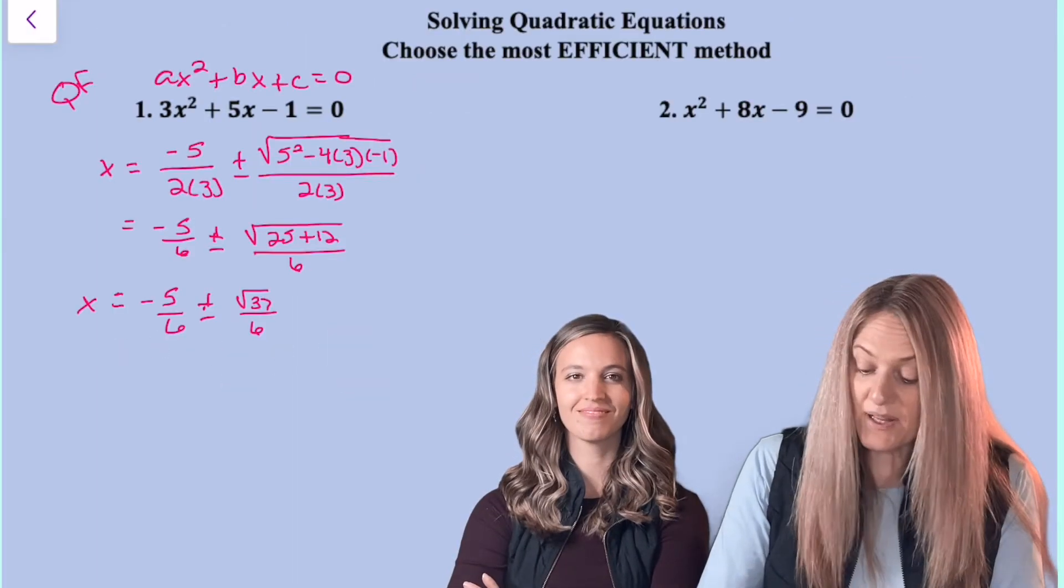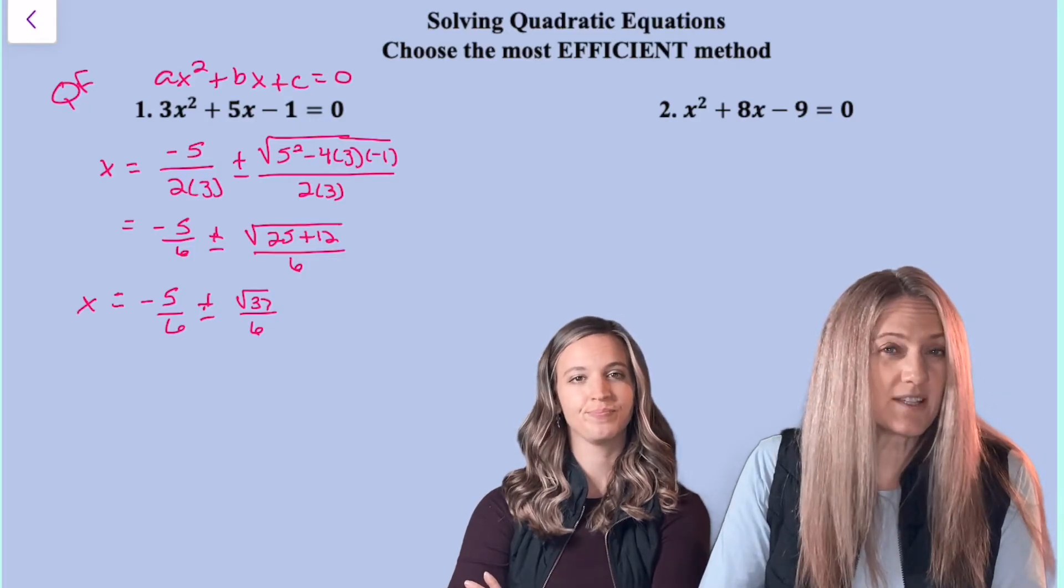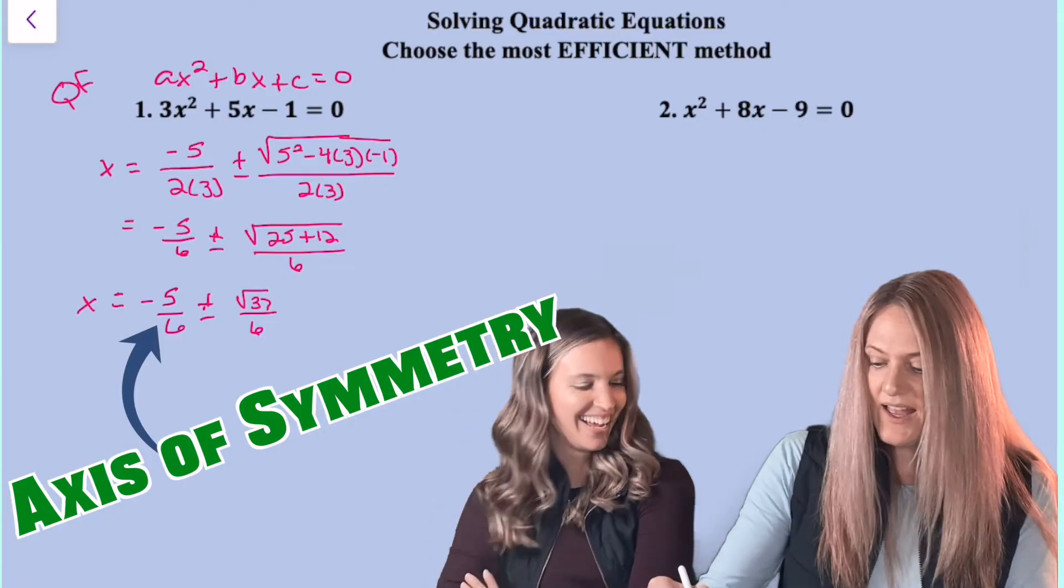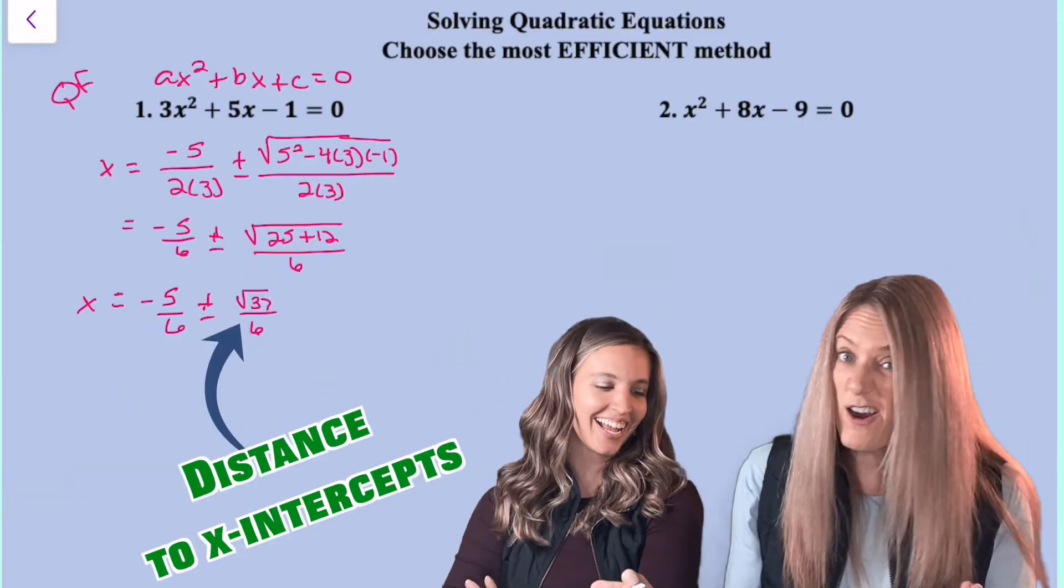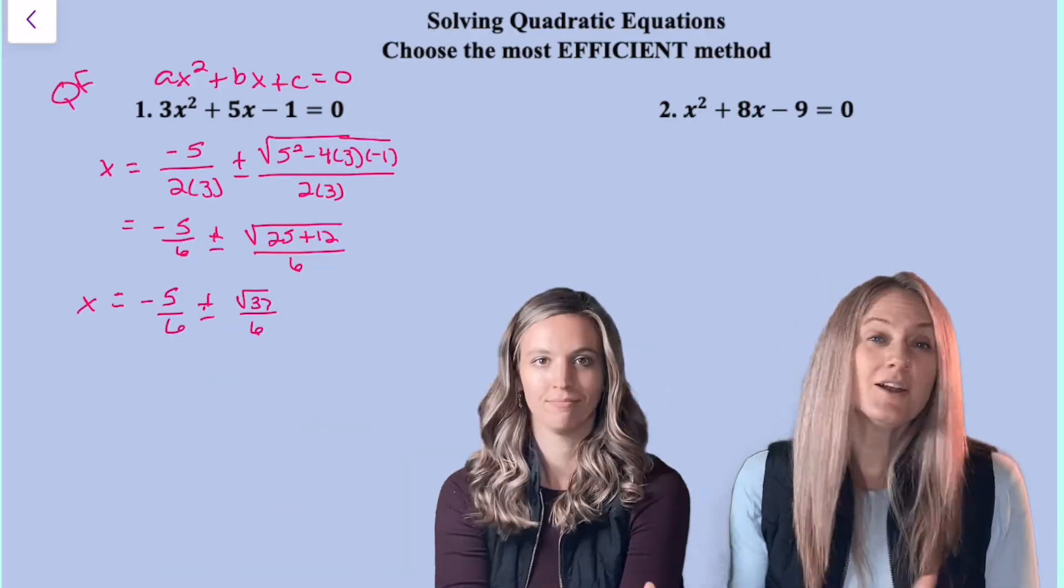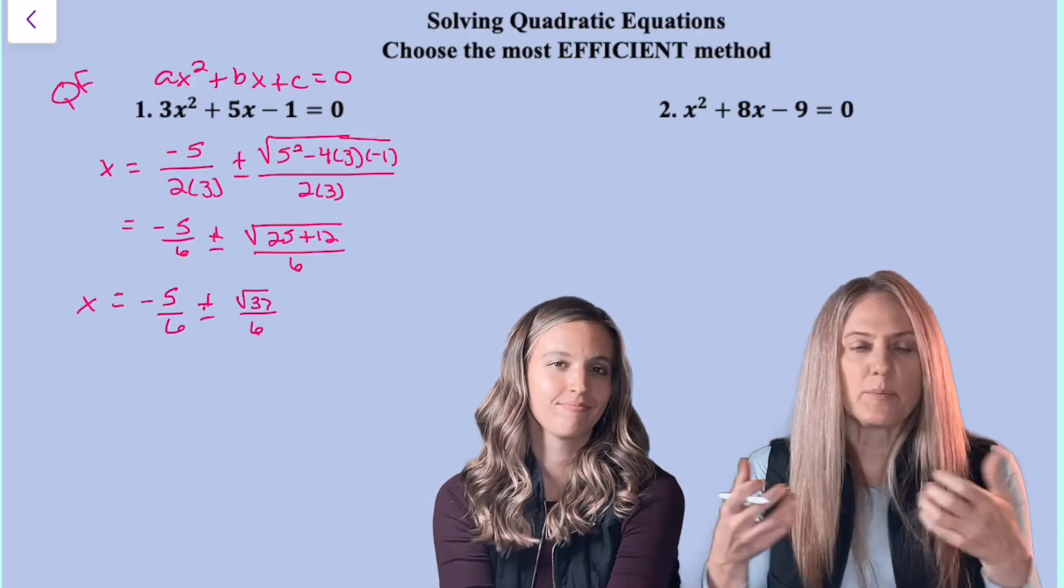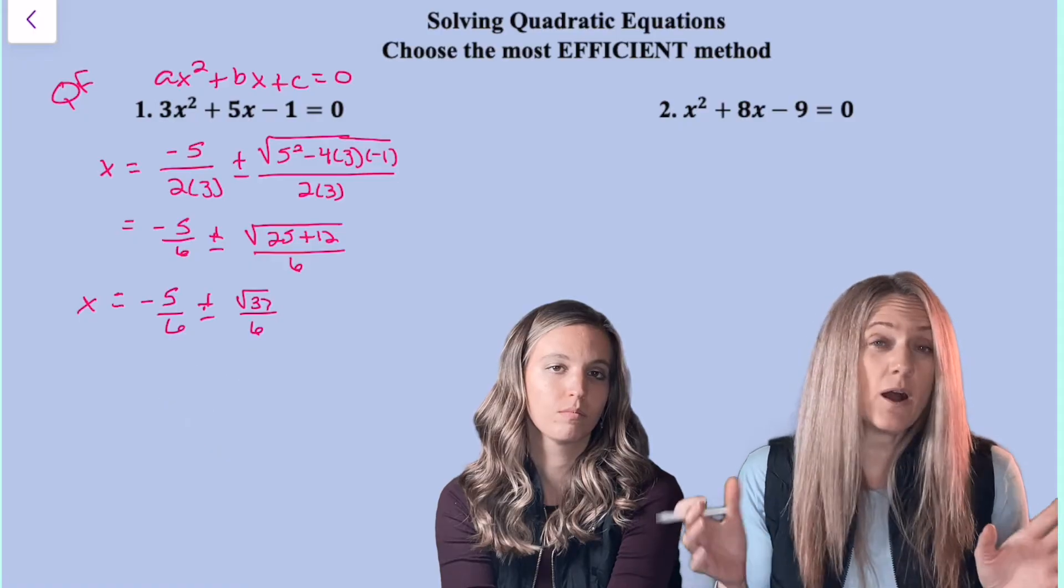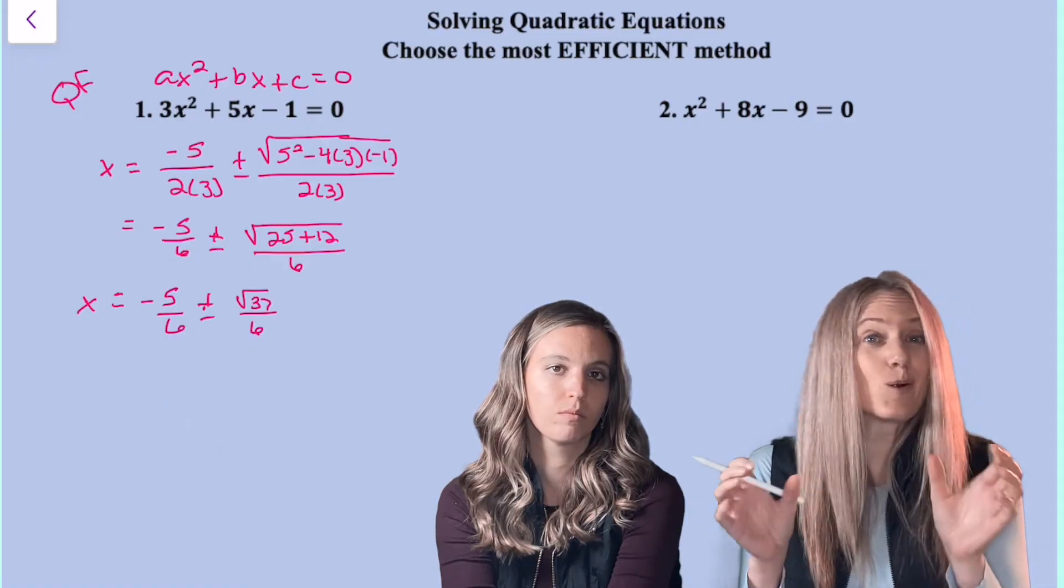X equals negative five-sixths plus or minus square root 37 divided by six. Whoa, that's my axis of symmetry. And this is how far from the axis of symmetry to get to my x-intercepts or solutions. You might notice that I just chose to have it broken apart into two pieces. It doesn't matter if you do or not. We can always rewrite it together or separated.